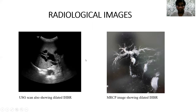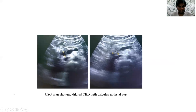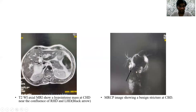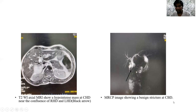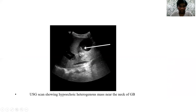Here are some radiological images. This is a USG scan showing dilated intrahepatic bile ducts; the MRCP image is also showing similar dilated IHBs. This is a USG scan showing a dilated CBD with a calculus in the distal part of the CBD. This is a T2-weighted axial MRI scan showing a hypointense mass at the CHD near the confluence of the right and left hepatic duct. This is an MRCP image showing a benign stricture with smooth tapering. This is a USG scan showing a hypoechoic heterogeneous mass near the neck of the gallbladder region.